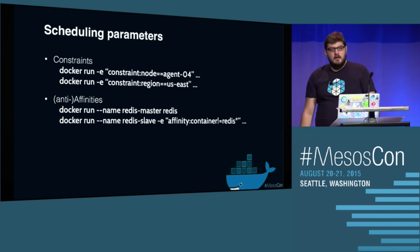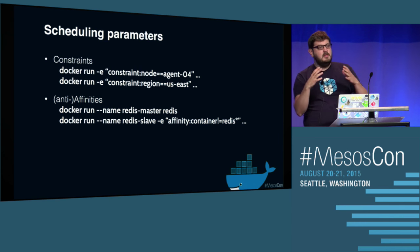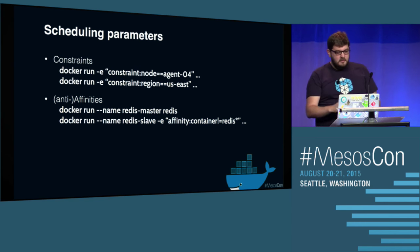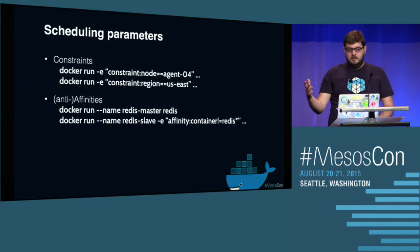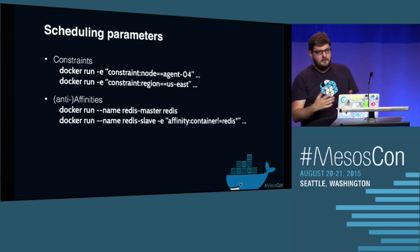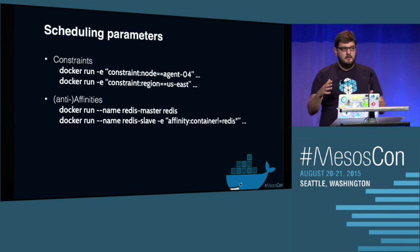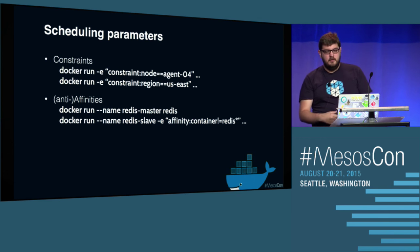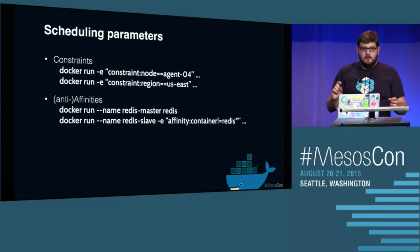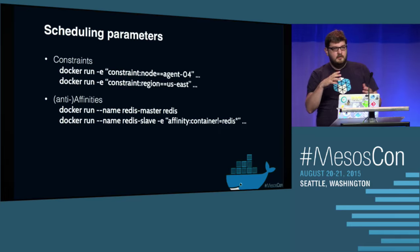We also have constraints and affinities. First example: you want to start a container on a specific agent. We have the node constraint — when you start your container, you pass a constraint like node equals agent-name, and we look at available offers and use one from that agent. If there's no offer for that agent, we wait a configurable time and then fail, saying we don't have an offer to run your container. For custom labels, you can say I want to run my container in a region like US East, and if you tagged your Mesos agent appropriately, we pick offers matching that label.